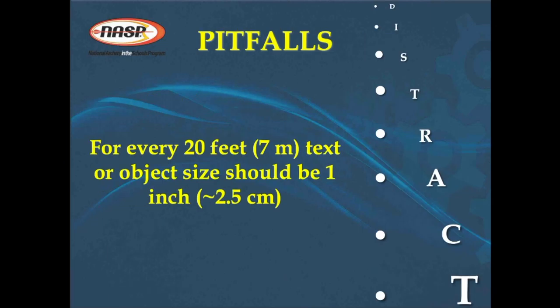A tip on avoiding the pitfall of something being too small for everyone to see: for every 20 feet of distance someone in the audience is from an object, that object must be at least one inch in size. So if the furthest person from you is 20 feet away, the object must be at least an inch. If the furthest person is 60 feet away — that's three 20s — the object or text needs to be three inches in size.